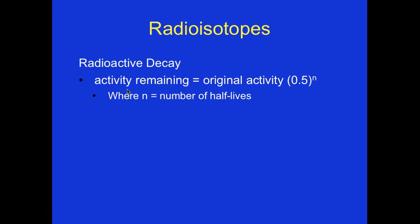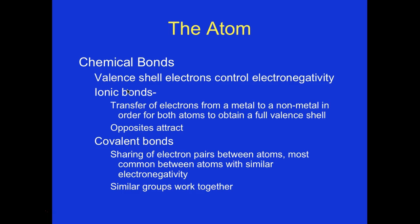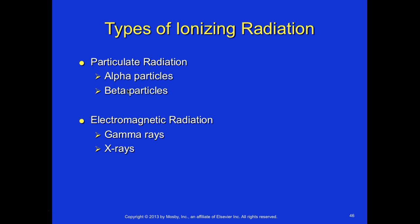The radioactive decay formula: activity remaining equals original activity times 0.5 to the nth power, where n is the number of half-lives. Regarding chemical bonds: valence shell electrons control electronegativity. Ionic bonds involve the transfer of electrons from a metal to a nonmetal so both atoms obtain a full valence shell — opposites attract. With covalent bonds, electron pairs are shared between atoms, most common between atoms with similar electronegativity — similar groups work together.